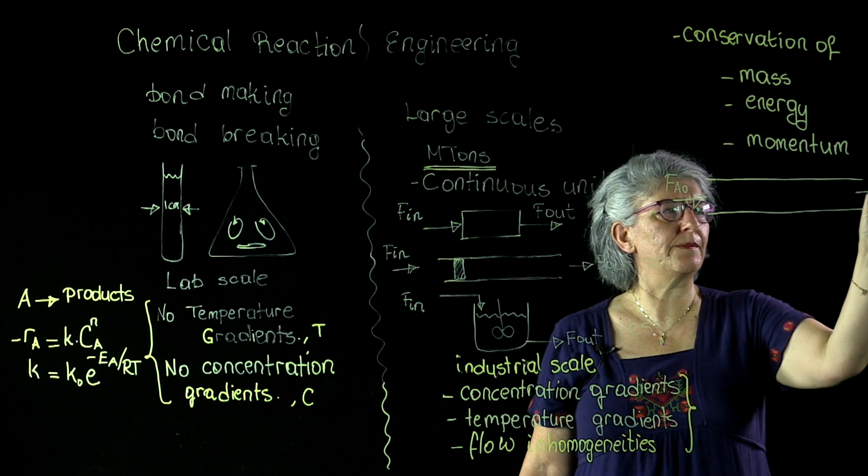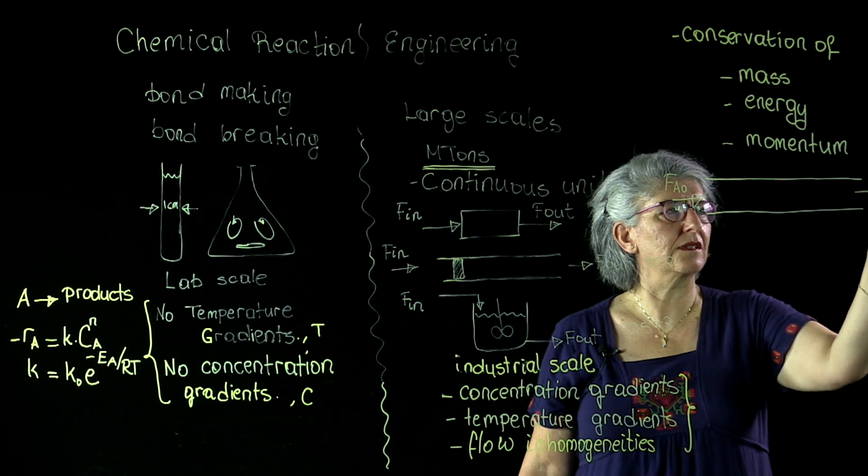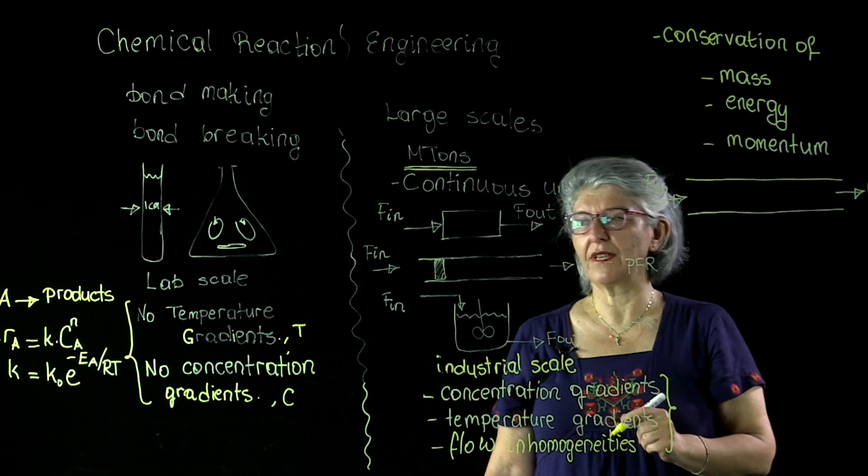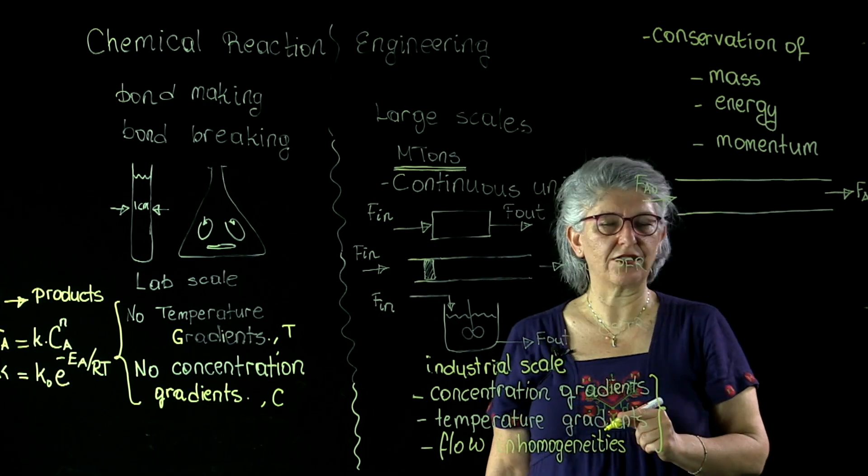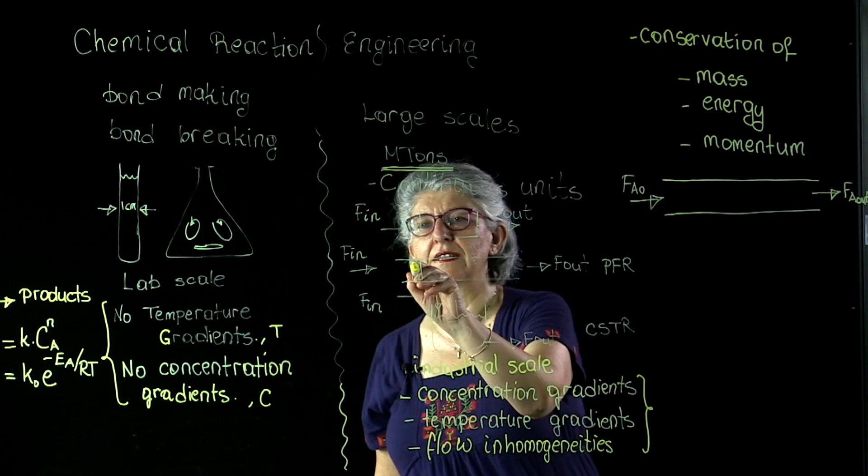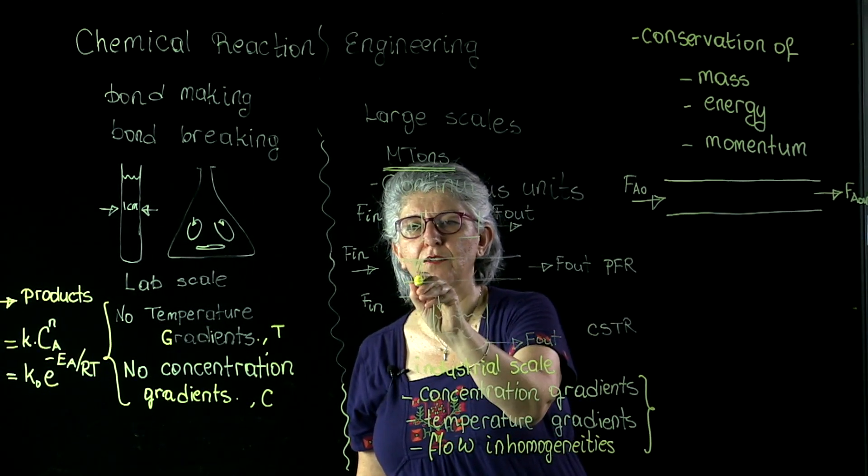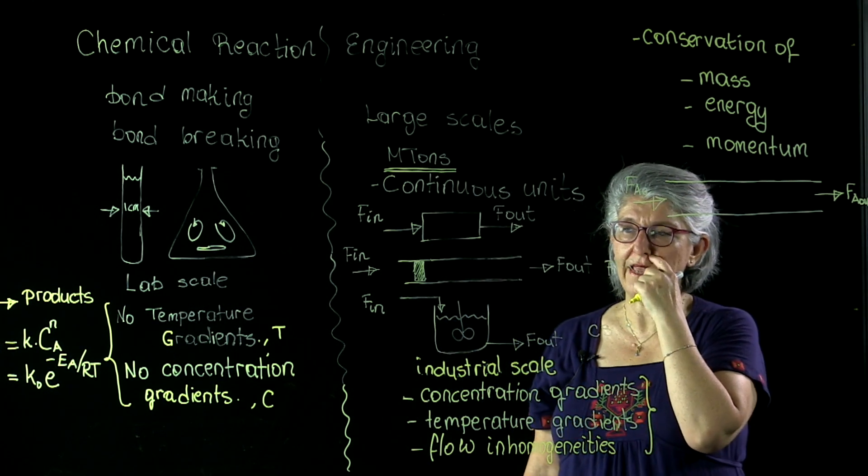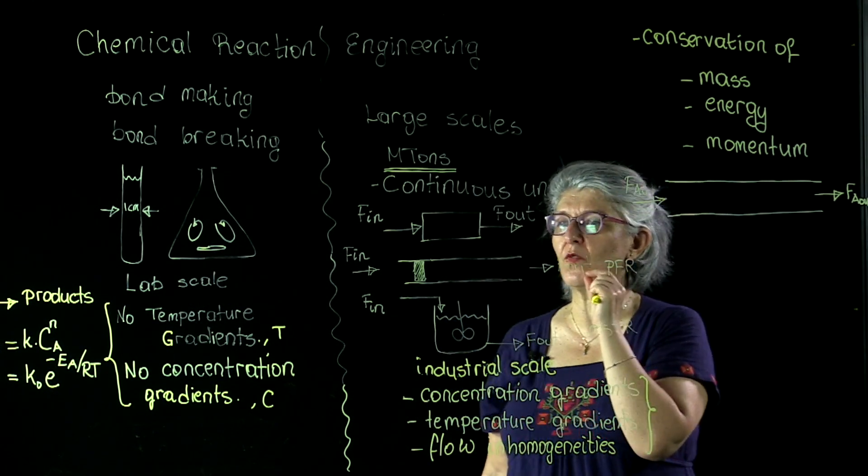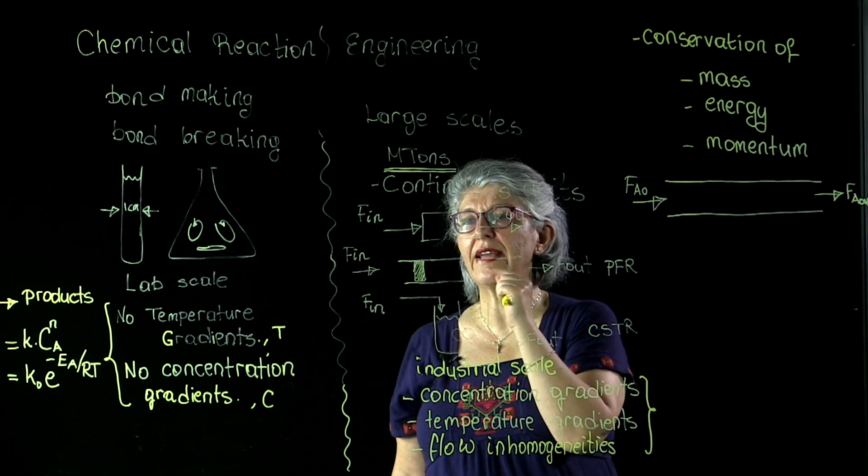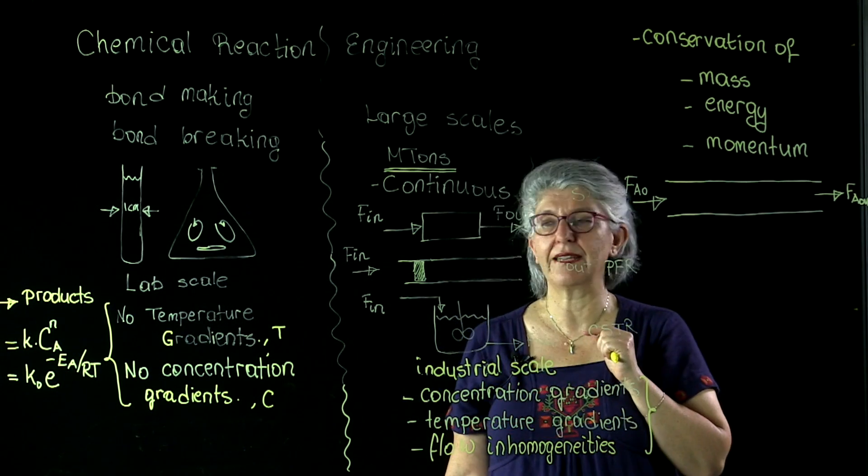Now, we are writing these balance equations for this hypothetical A goes to products reaction. Our plug flow reactor, the idealized plug flow reactor, on this side of the board, the fluid element was moving as if it were a plug. In other words, we had no radial mixing in this reactor.